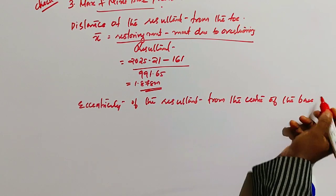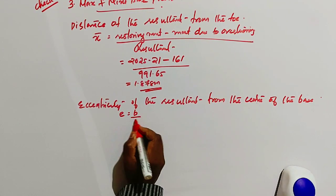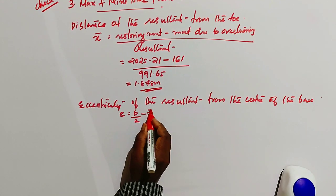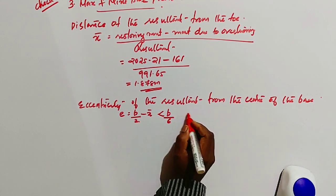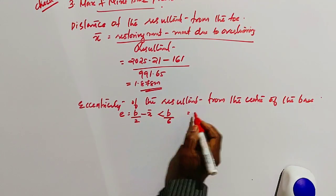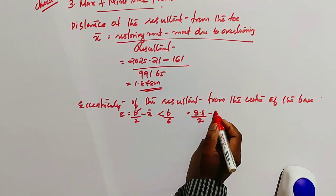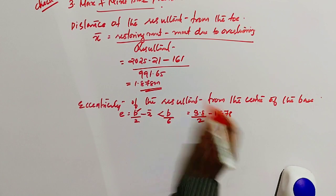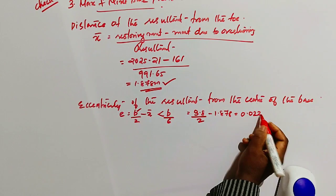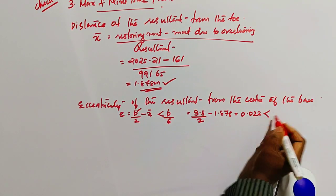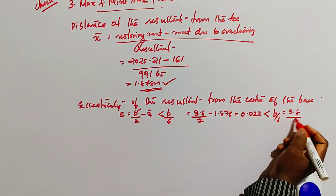E equal to B by 2 minus x-bar, that is less than B by 6. Where B is the base width, that is 1.2 plus 1.4 plus 1.2, it is 3.8 divided by 2 minus x-bar, it is 1.878. Then the answer is 0.022.